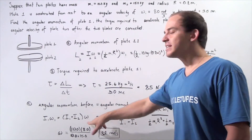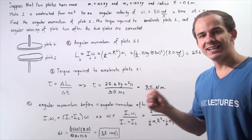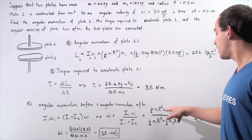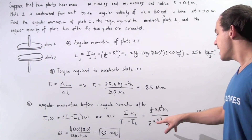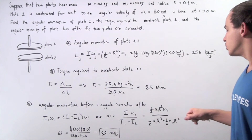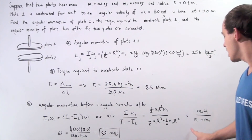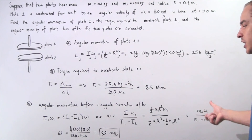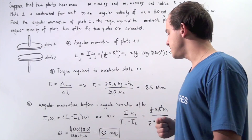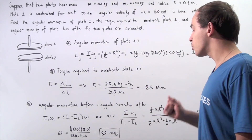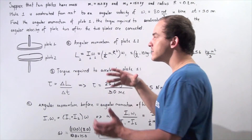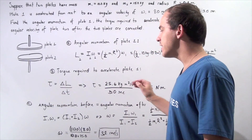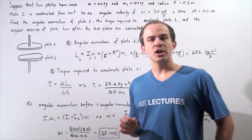Solving for omega, we substitute I1 equals one-half M1 R squared and I2 equals one-half M2 R squared. The halves and R terms cancel, leaving M1 times omega 1 divided by (M1 plus M2). Plugging in our values: 10 times 8 divided by (10 plus 15) gives us approximately 3.2 radians per second as the angular velocity of the system after the two plates are connected. We used conservation of angular momentum because the external torque on the system is zero.